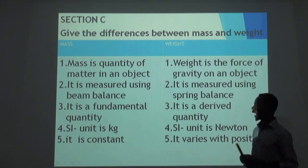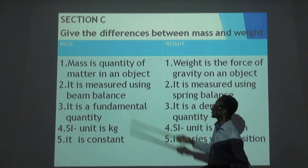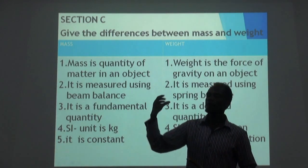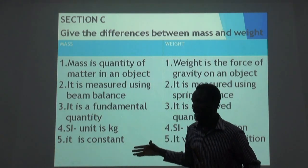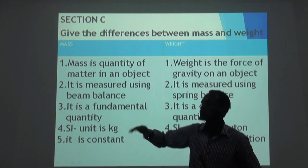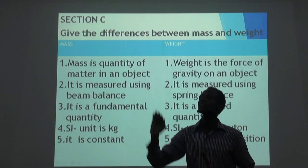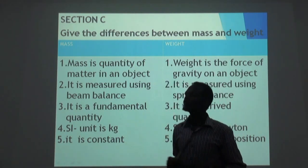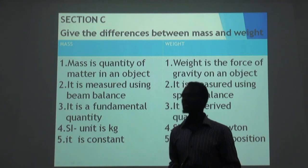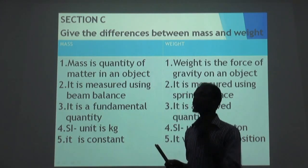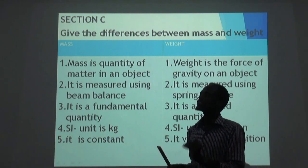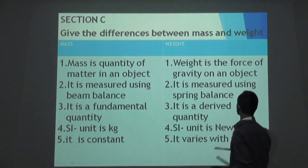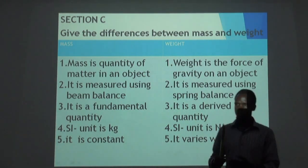The last difference is that mass is constant. Why is it constant? If you take 10 kilograms from here to Canada, you will find it the same. If you take 10 kilograms from here to Europe, you will find it the same. But if you take 10 Newtons from here to Europe, you will find it may increase or decrease — because weight varies with position, it means it changes with position.